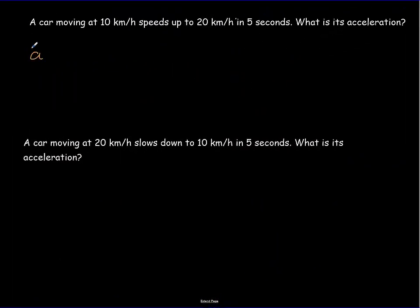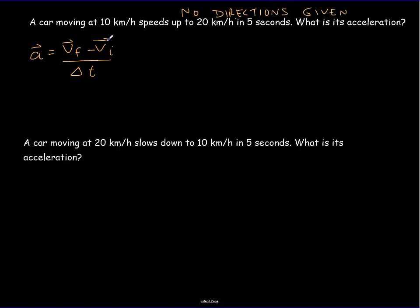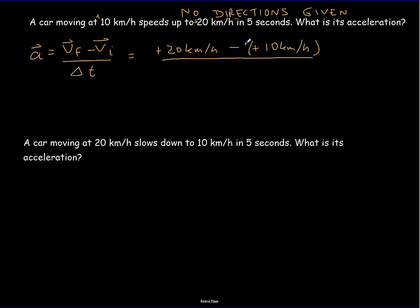There are a few things to watch out for when using the acceleration equation. In this first problem, no directions are given — we don't know if the 10 kilometers per hour is left, right, north, or south. We can assume both speeds are in the same direction and that direction is positive. So the final velocity is +20 km/h and the initial velocity is +10 km/h over five seconds. Plugging in, we get an acceleration of 2 kilometers per hour of speed gained every second.